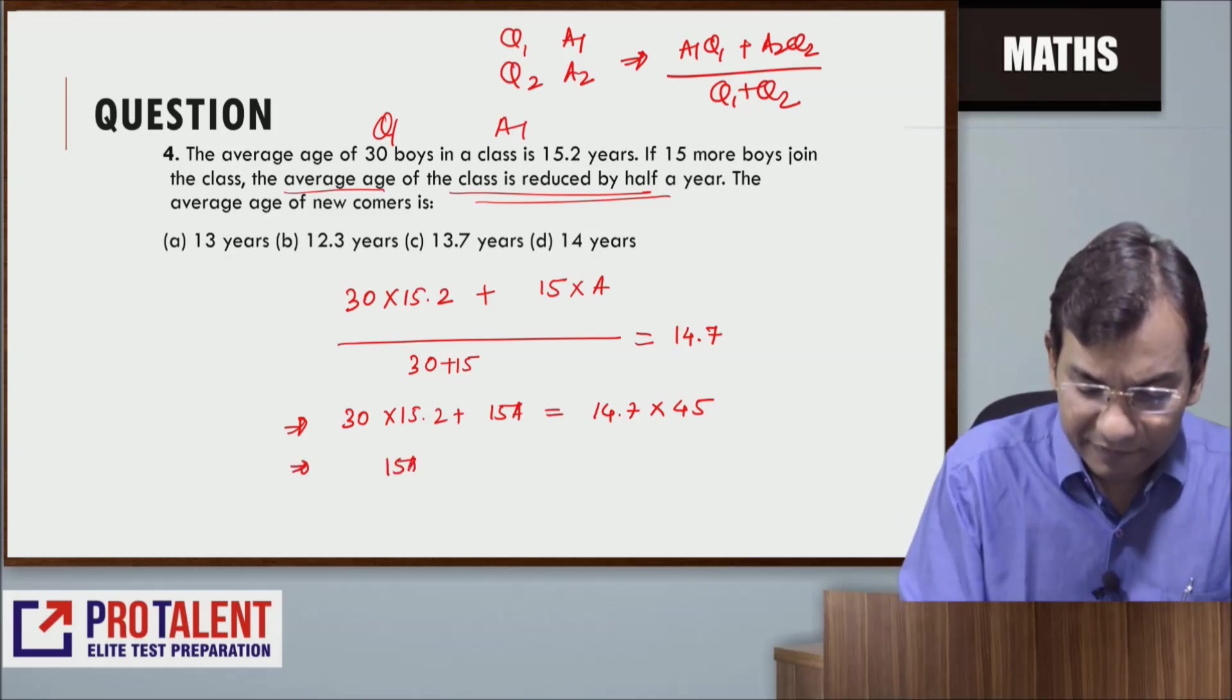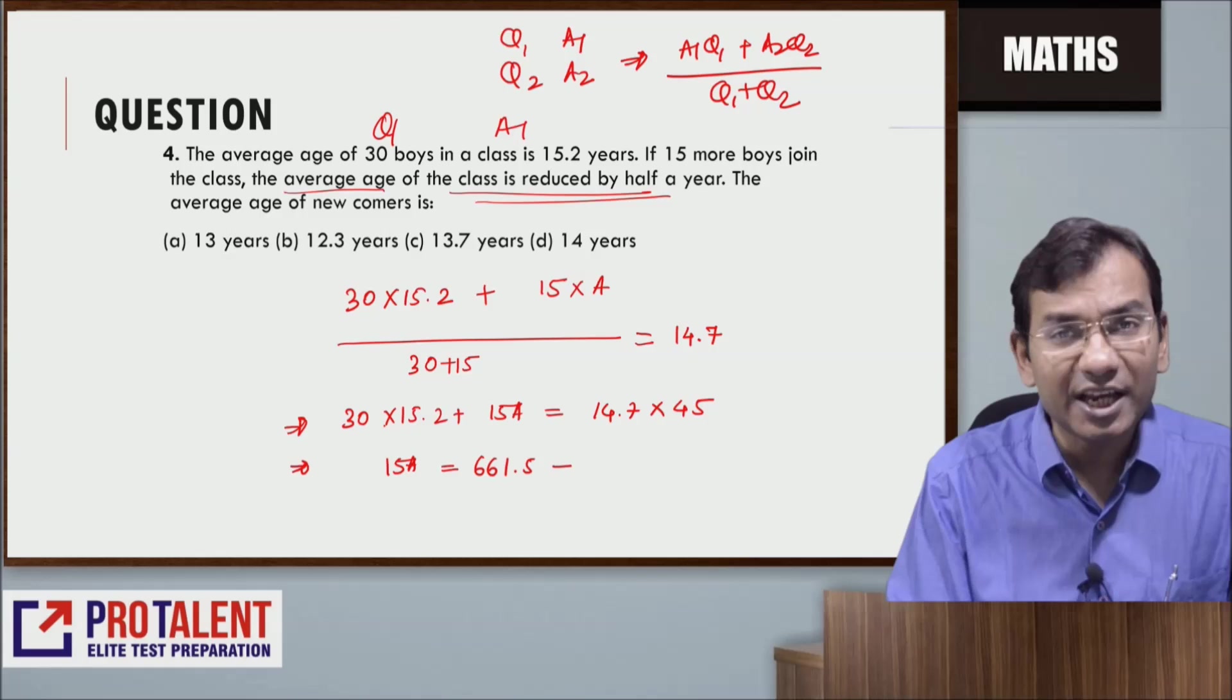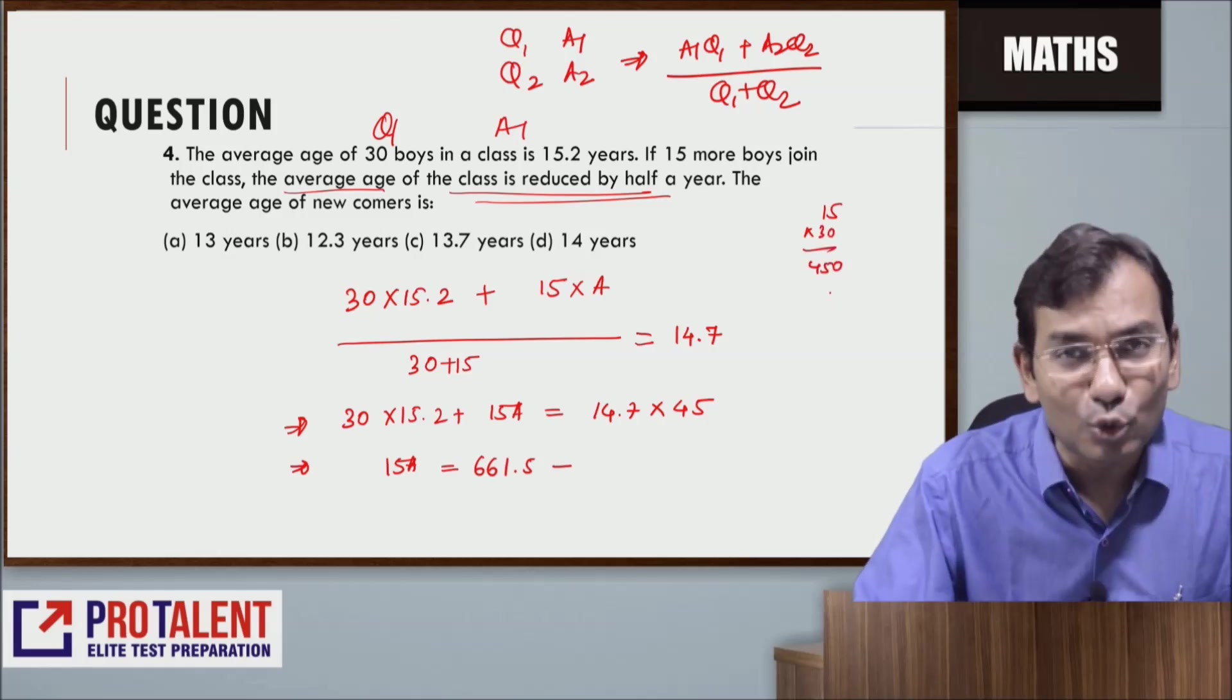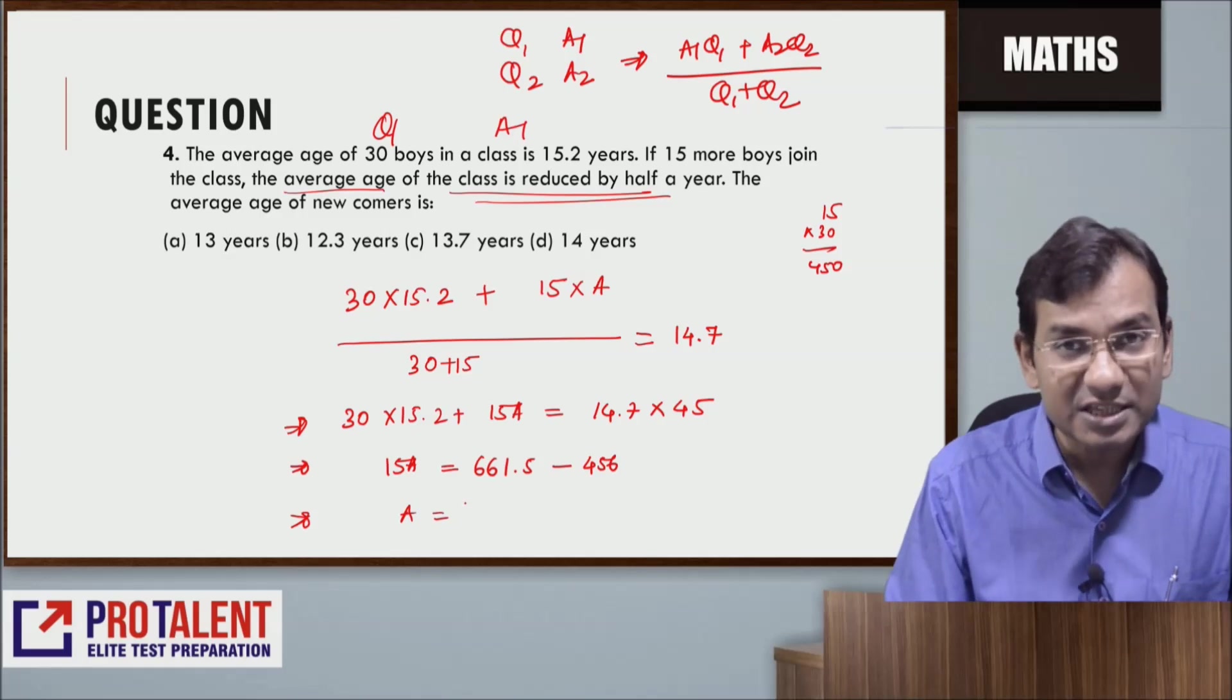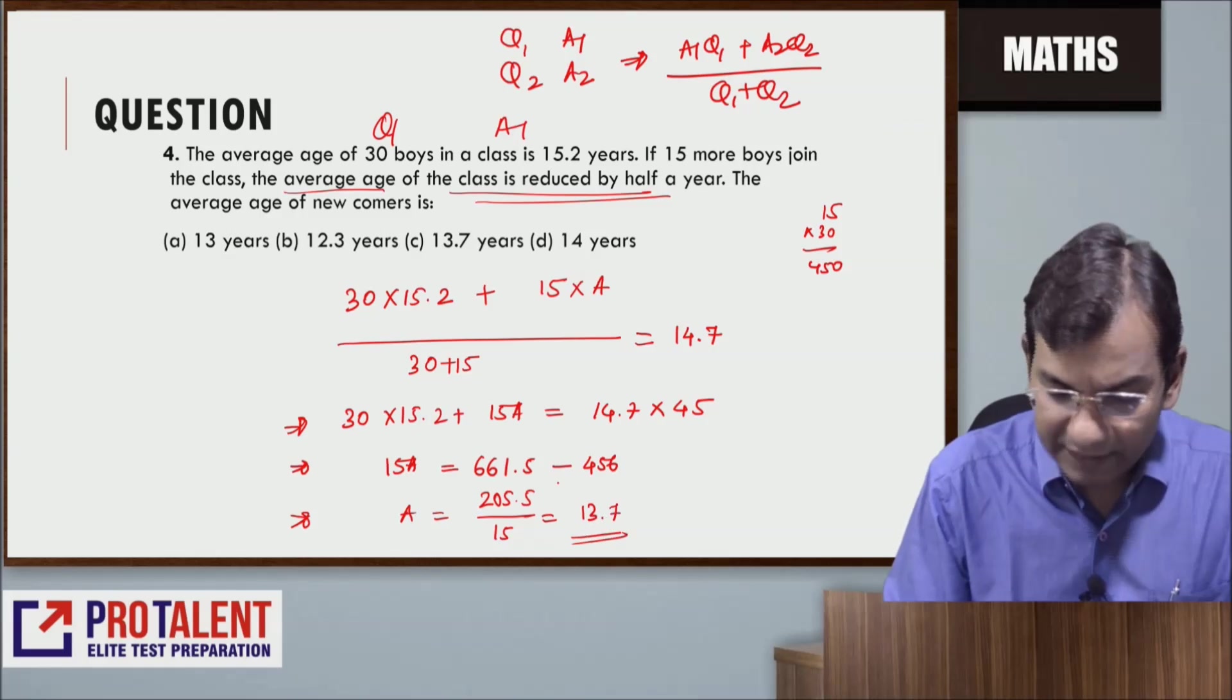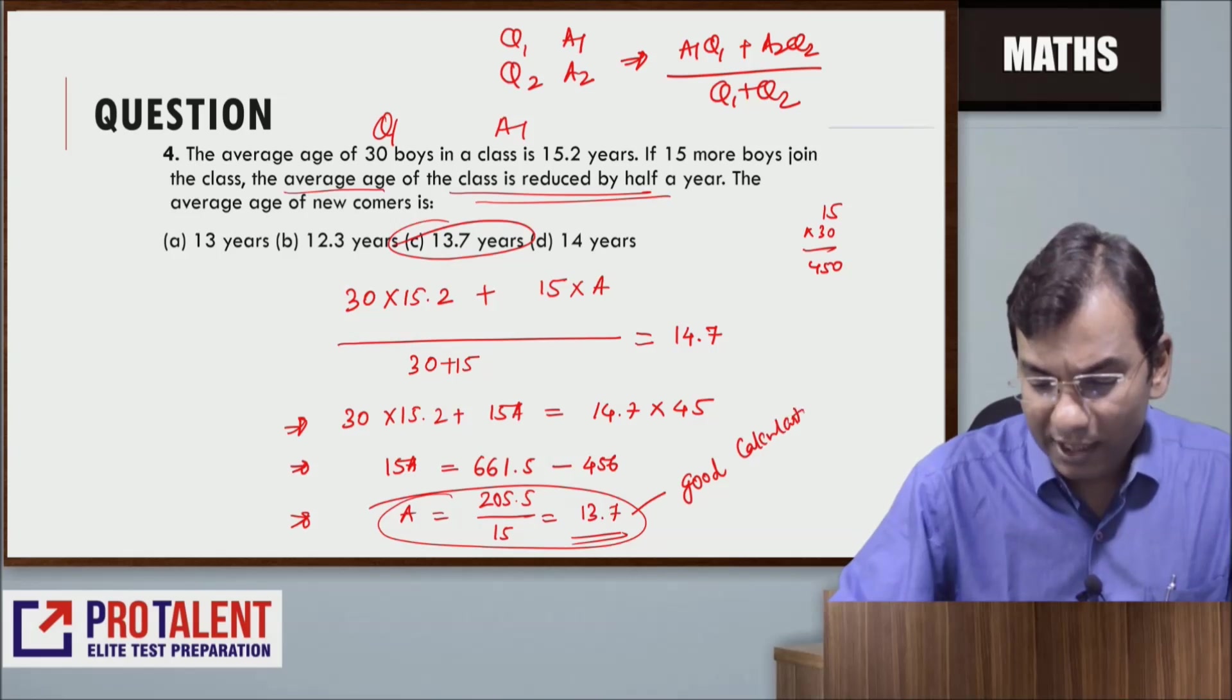Now let me do the calculation properly. 14.7 × 45 equals 661.5, minus 30 × 15.2. 15 × 30 is 450, plus 30 × 0.2 which is 6, so that's 456. My average would be (661.5 - 456) / 15 = 205.5 / 15 = 13.7. So the answer is 13.7 years. This requires good calculation capability.